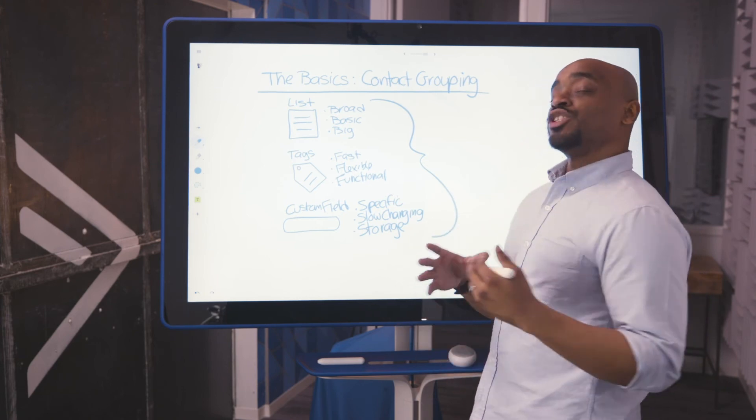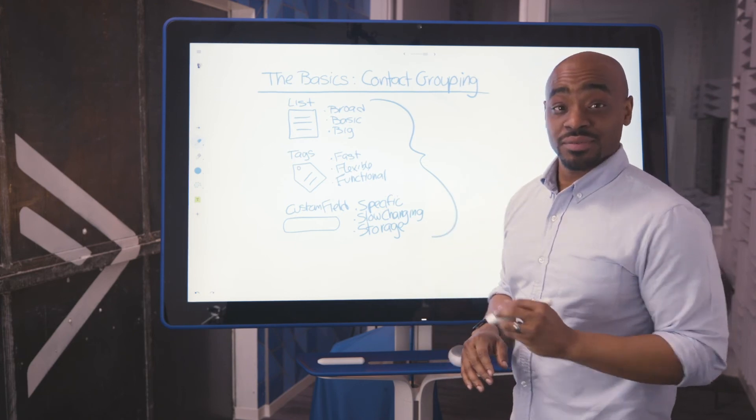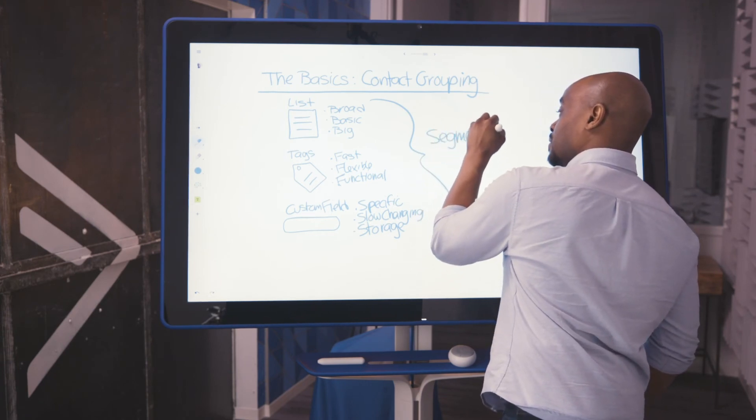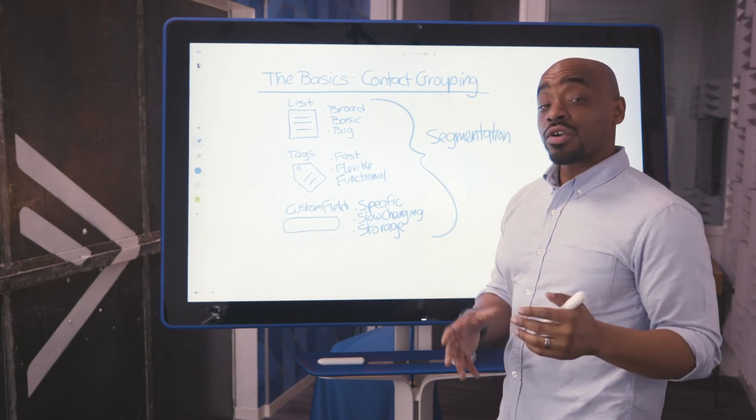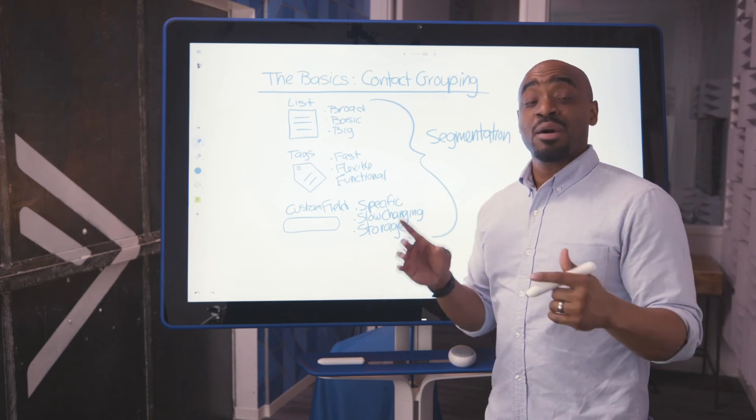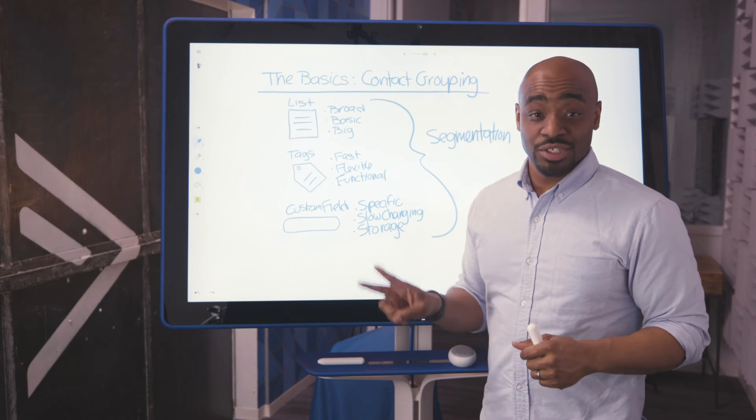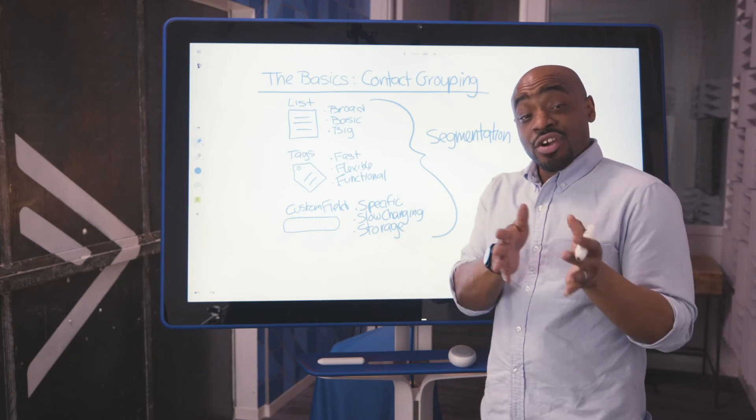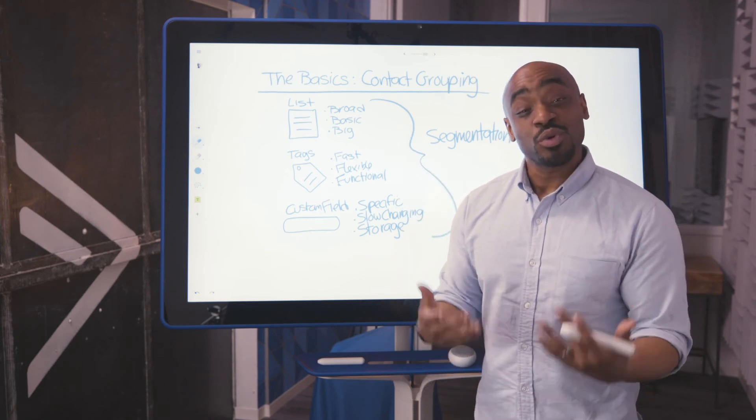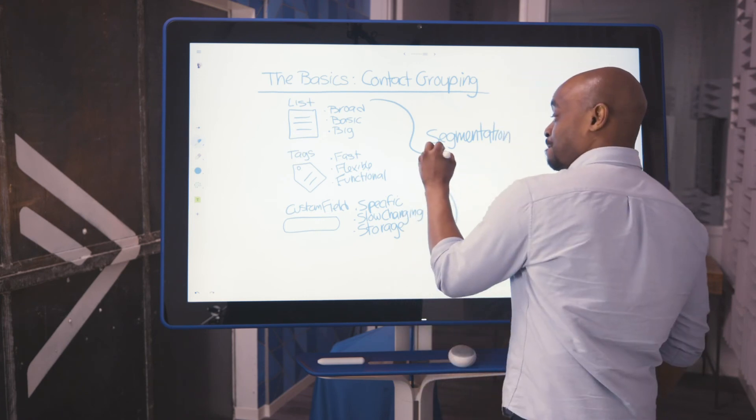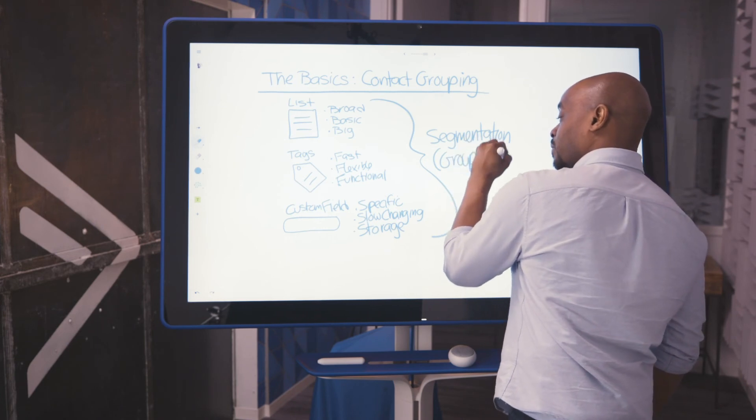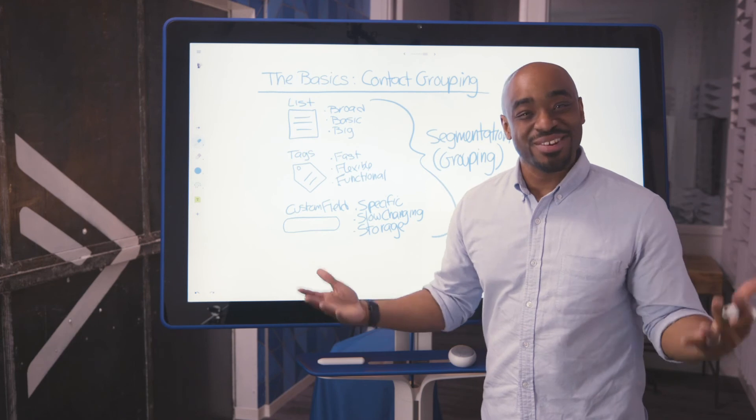This is what is called segmentation. Some of you may have heard of this term. Segmentation deals with the process of grouping your contacts by like attributes and or actions. So when your contacts share attributes or actions, we want to group them so that we know how to speak to them. So another word for segmentation is grouping. Which brings us back to the basics of contact grouping.